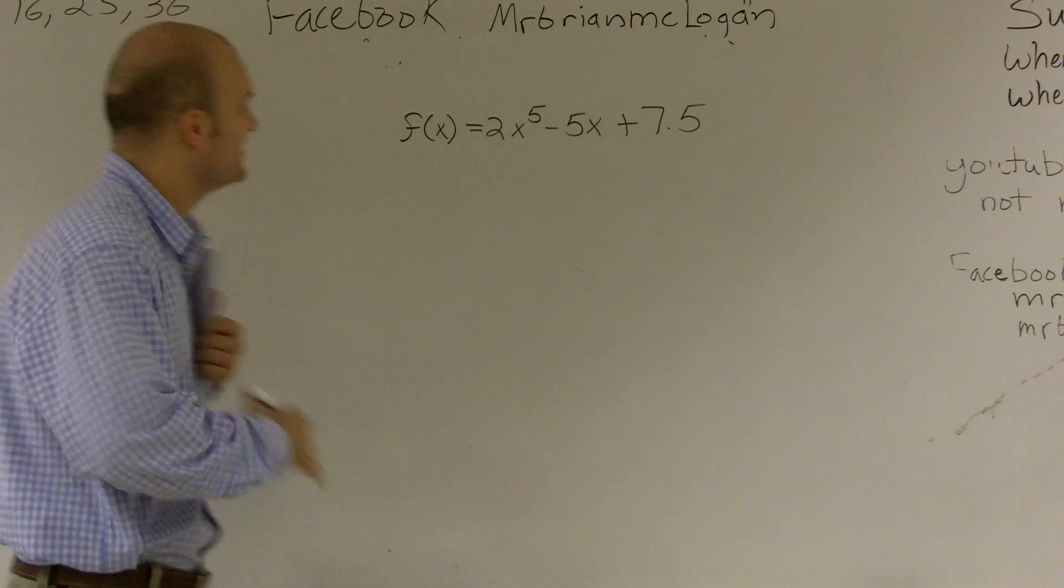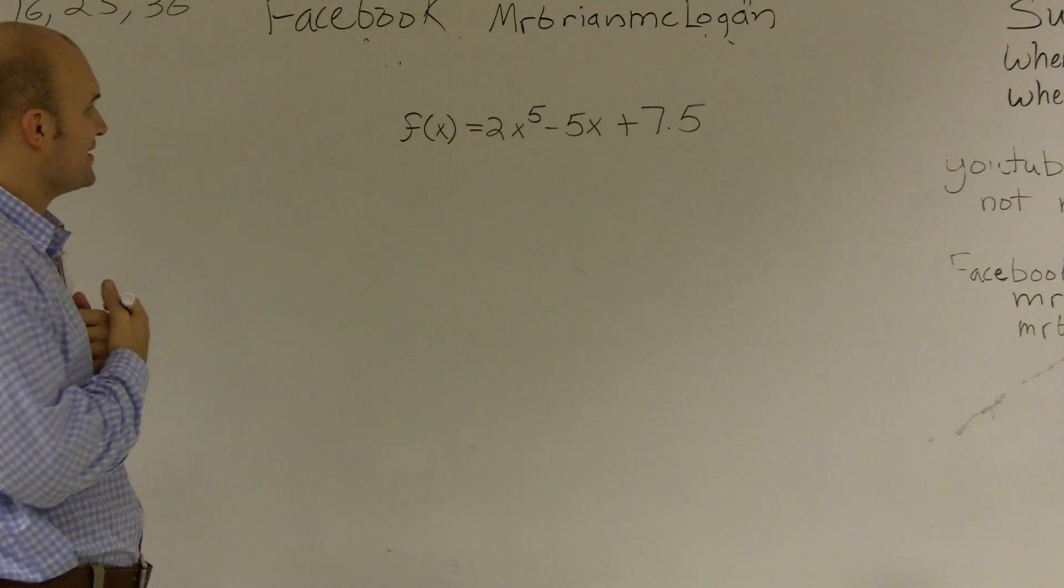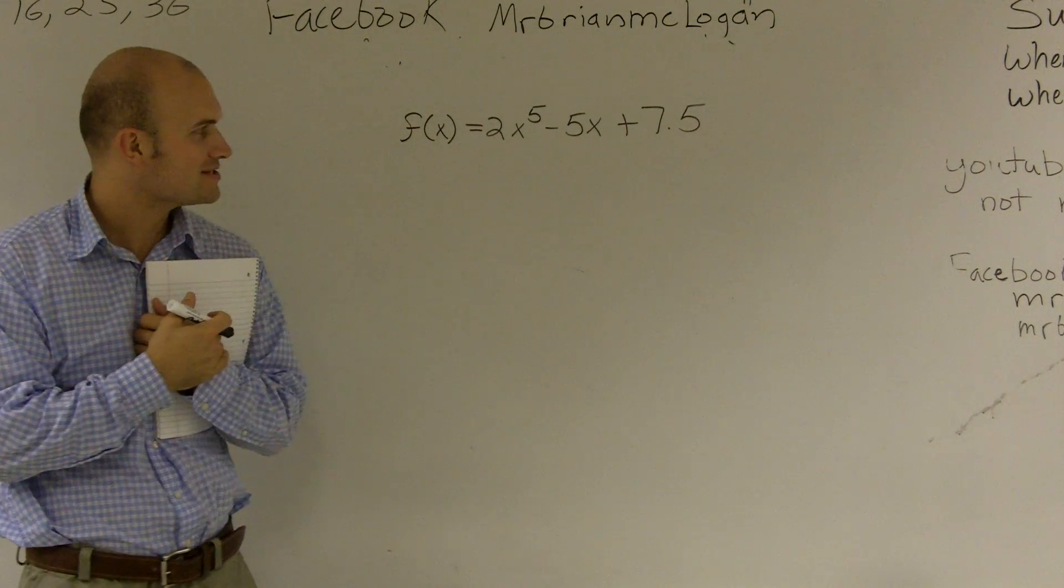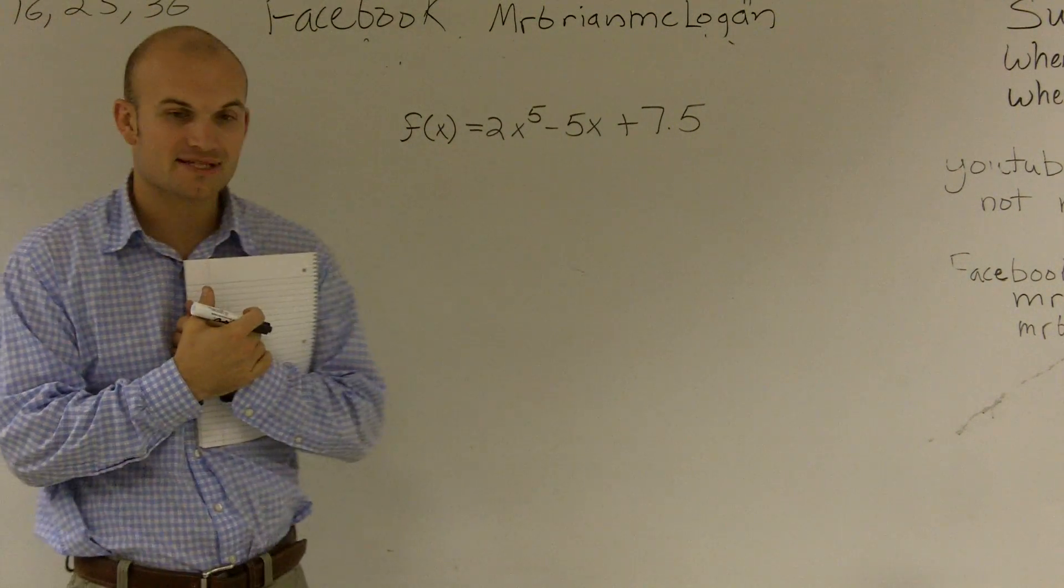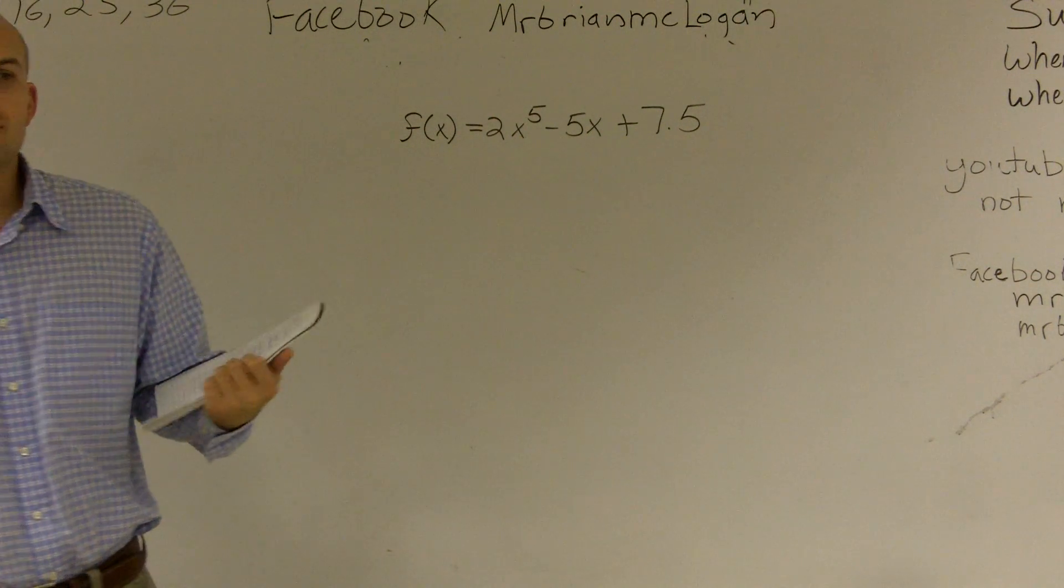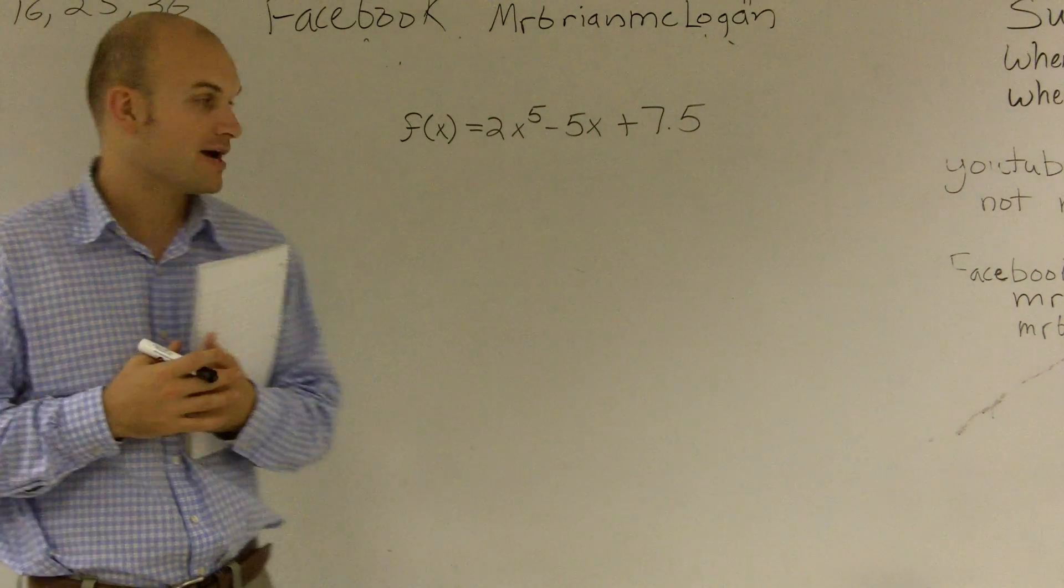You ready? All right. So for this problem, what we're going to look at is we have f(x) = 2x^5 - 5x + 7.5. So what we're going to do is we want to find the end behavior of this graph.